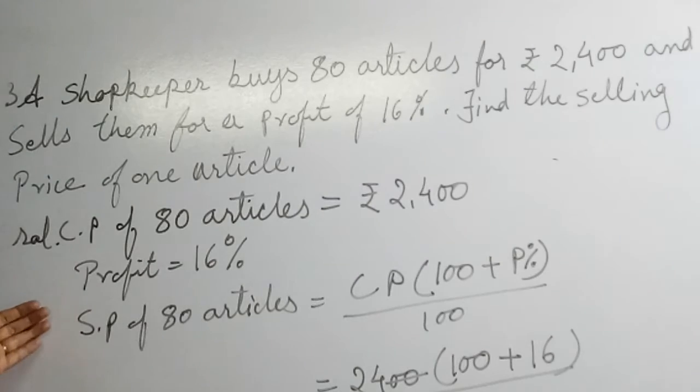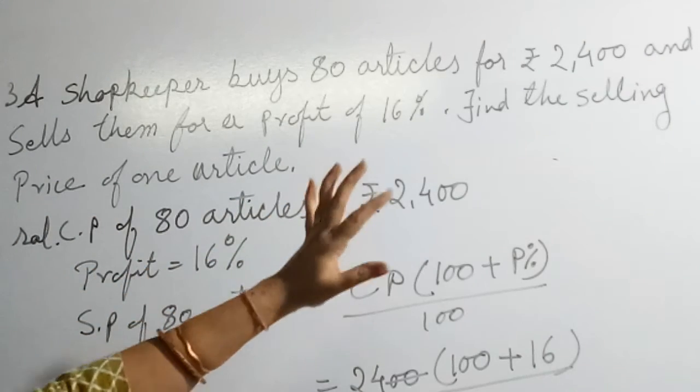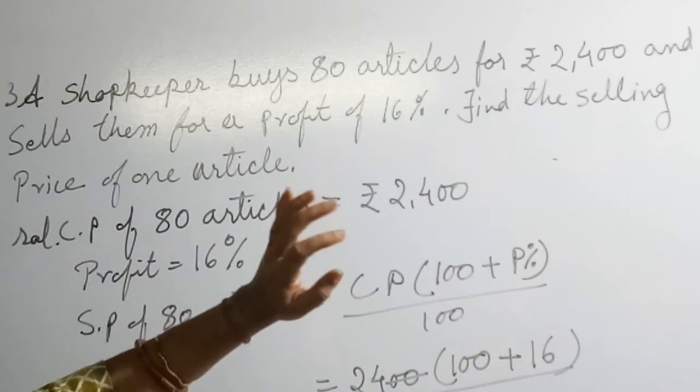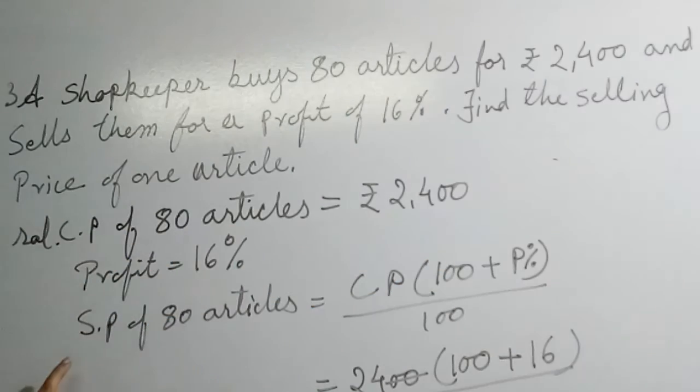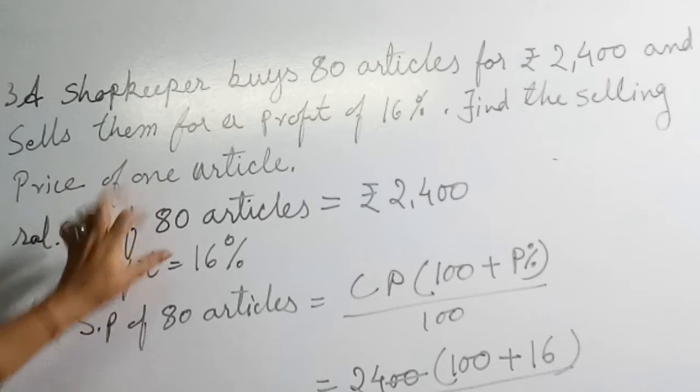Now we have two direct formulas which we have understood in module 1. Those who have not seen, please see that video again. We need selling price of one article, and we know 80 articles cost price.